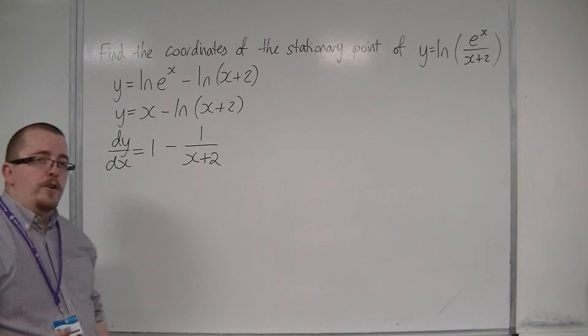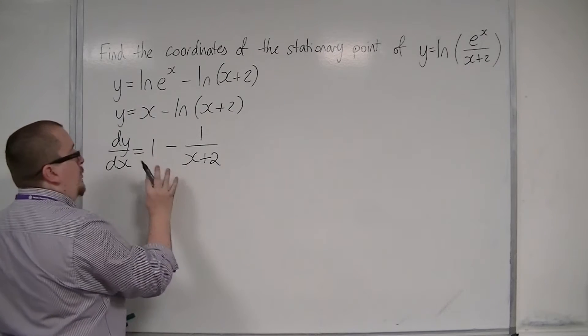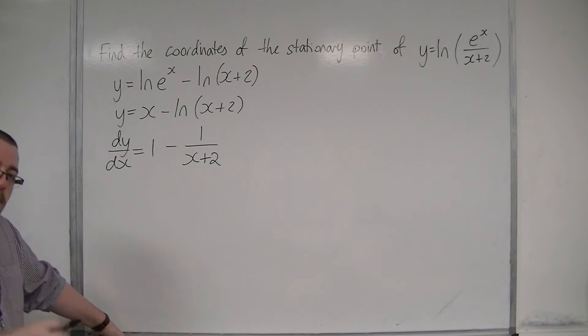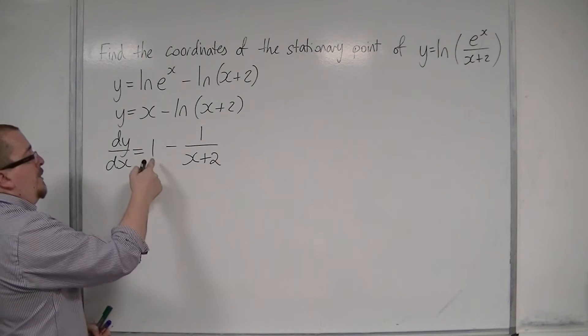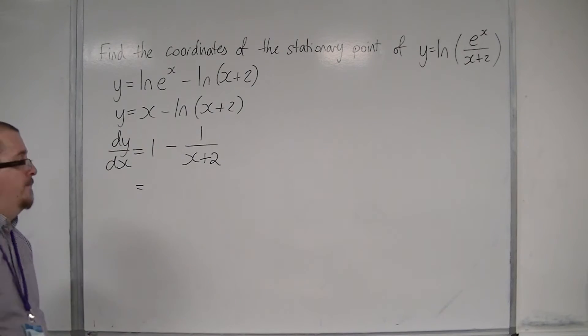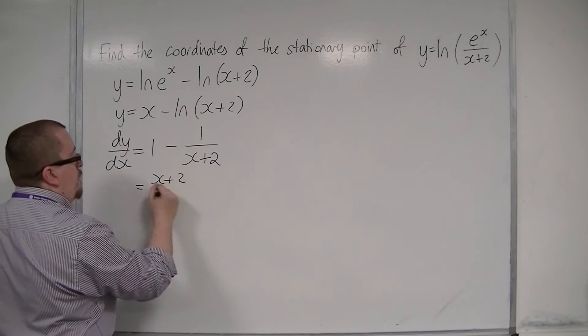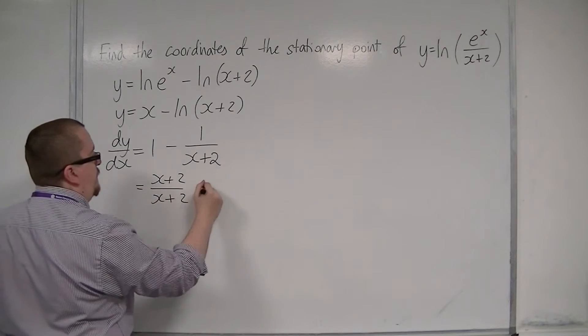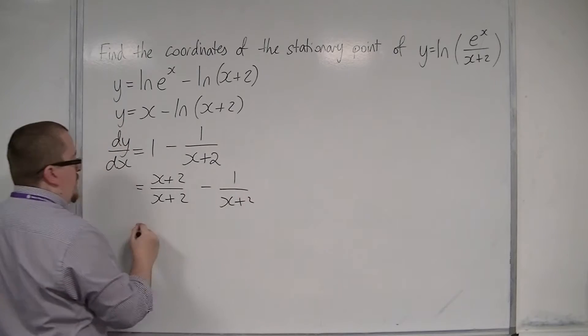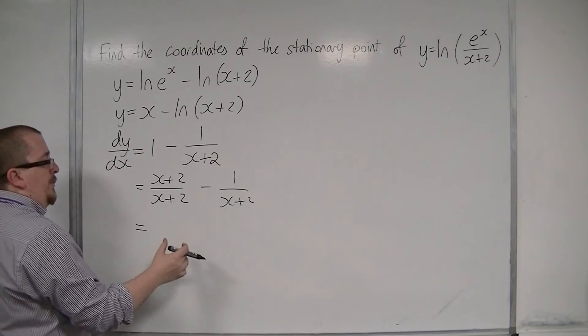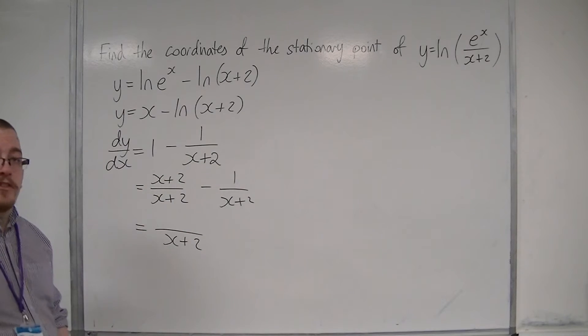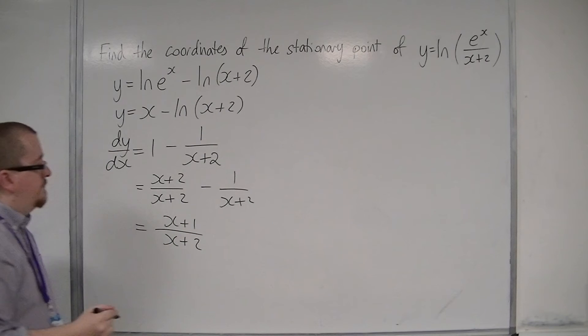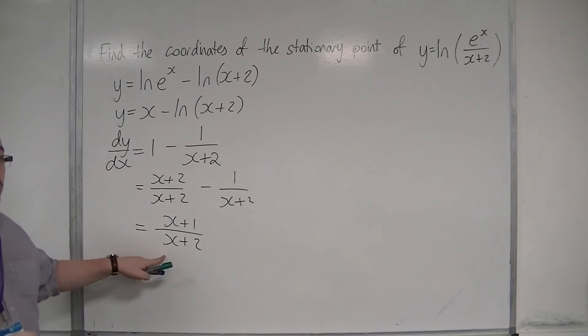So, that can be easily differentiated. Now, in order to work with this, I'm going to combine the 1 and the 1 over x plus 2 into a single fraction. For that to happen, I'm going to have to have a common denominator. So, I'm going to write 1 as x plus 2 over x plus 2. So, now, I have x plus 2 as the denominator and I've got x plus 2 take away 1, which is just x plus 1. So, this is dy by dx.